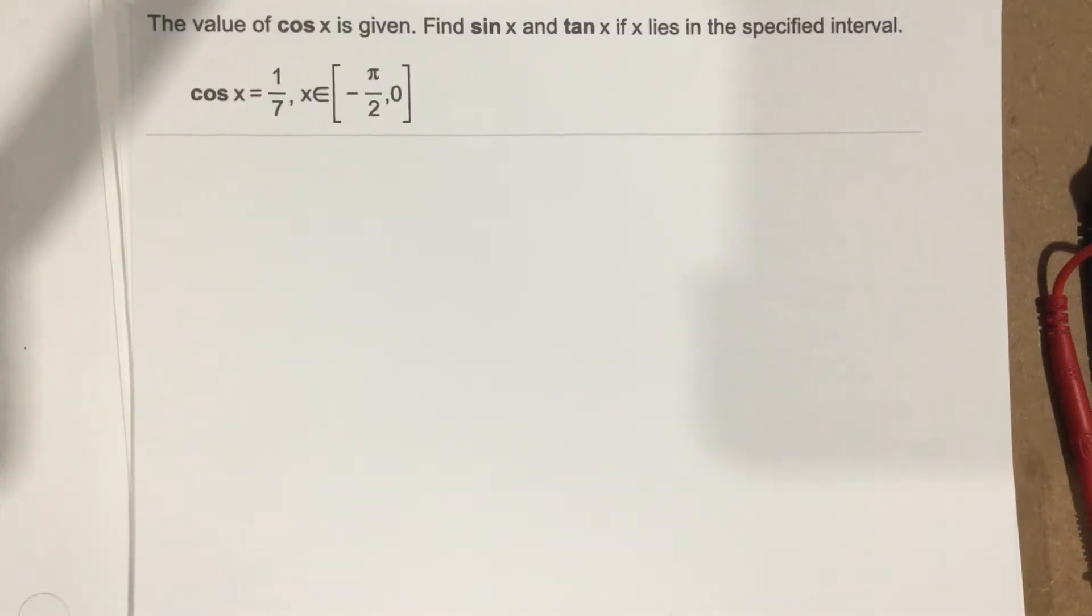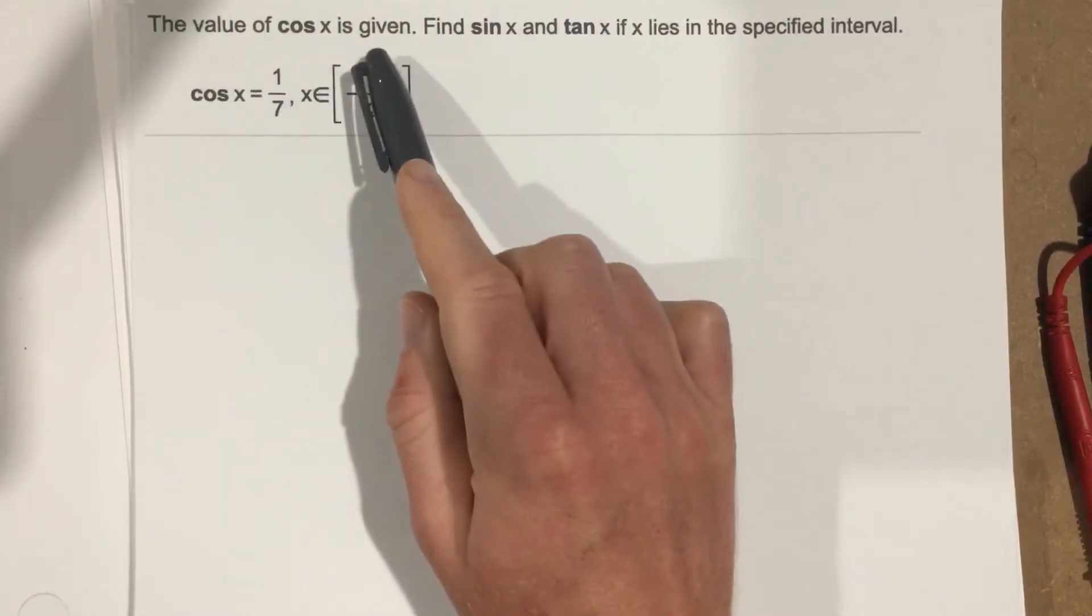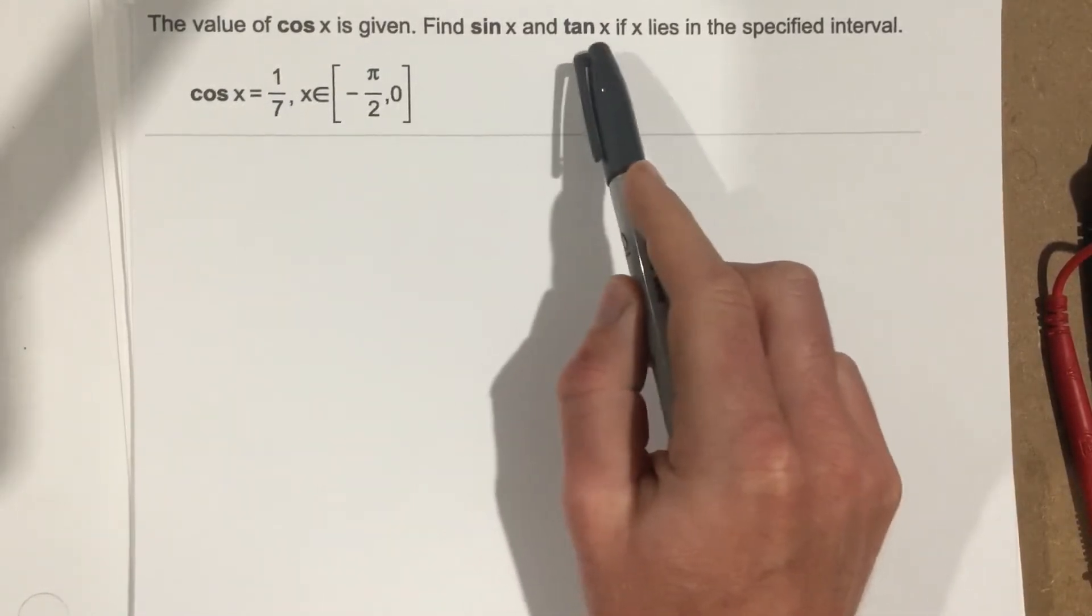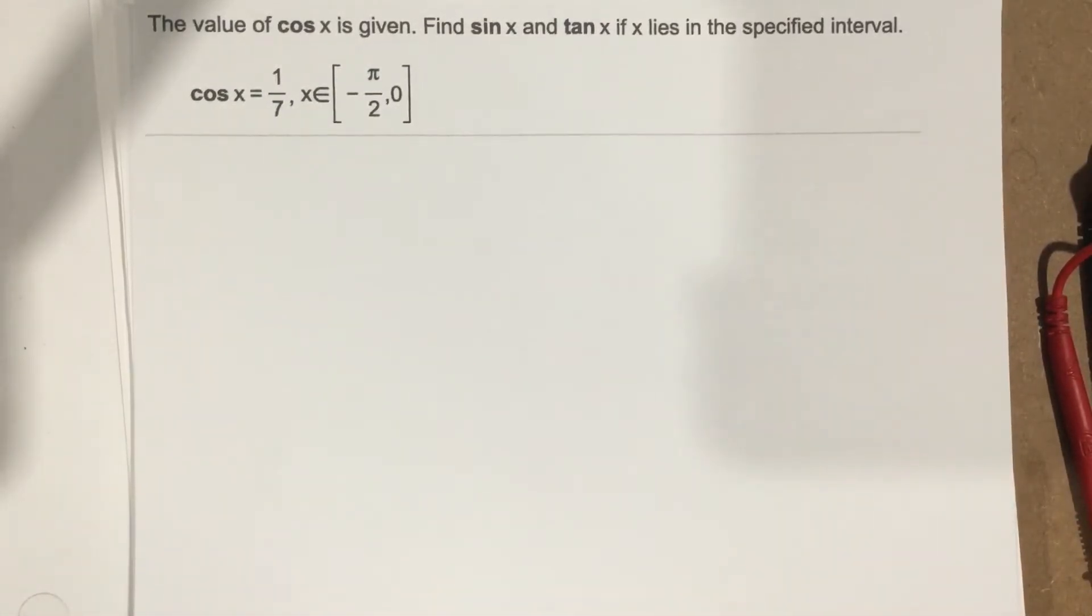This is problem number 4 from section 1.3. In this problem it says the value of cosine x is given. Find sine x and tan x if x lies in the specified interval.